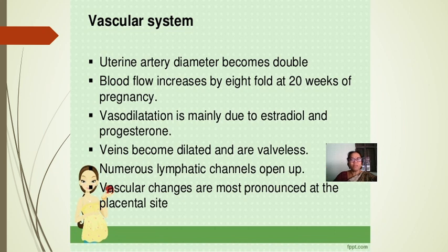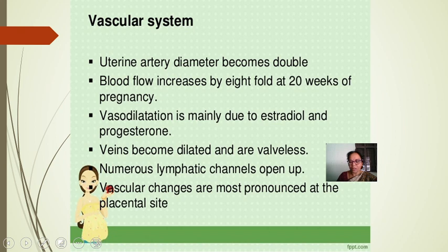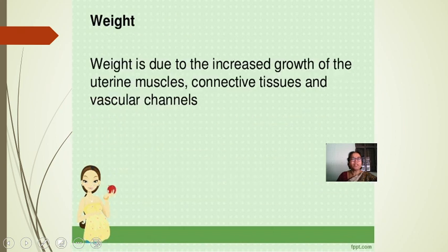Regarding the vascular system: the uterine artery diameter doubles and blood flow increases eightfold at 20 weeks of pregnancy. Vasodilation is mainly due to estradiol and progesterone. The veins become dilated, and numerous valveless lymphatic channels open up. Vascular changes are most pronounced at the placental site.